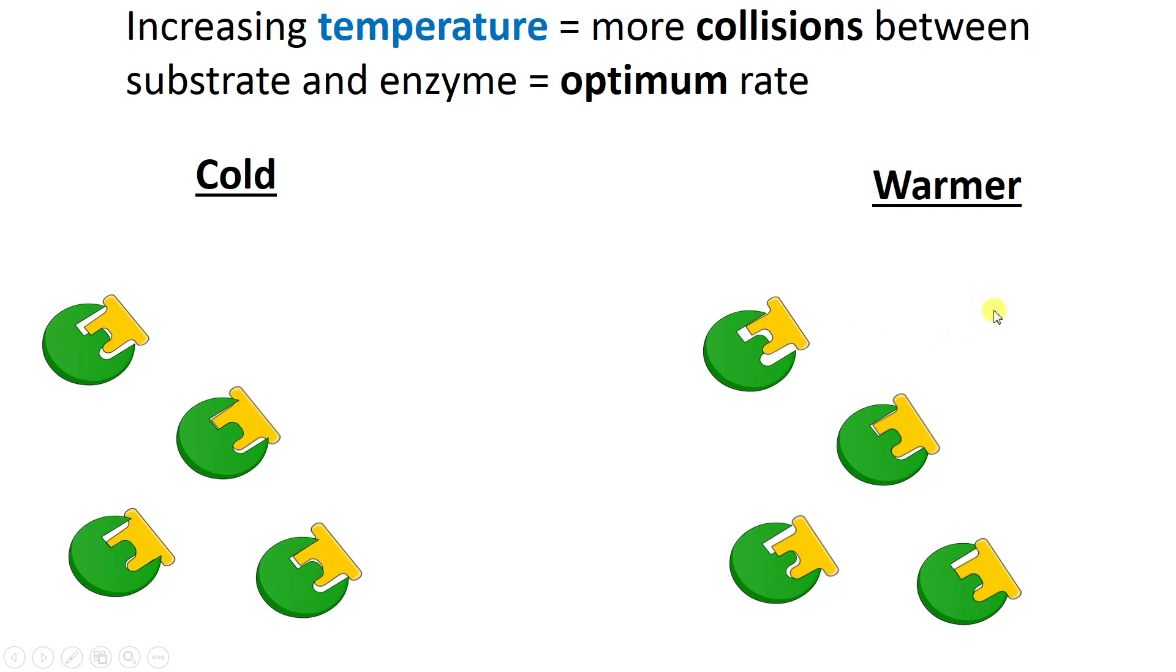Okay, up here it might be a bit confusing. It might seem that they find them faster in this animation. It's not that they find them faster, there's just more likelihood of collisions if they're moving faster anyway, and that's what happens when you increase the temperature.